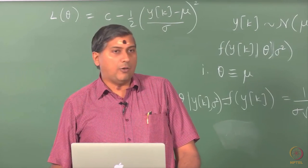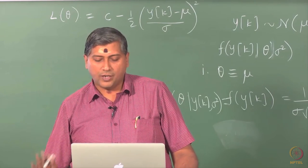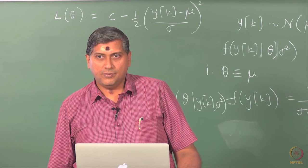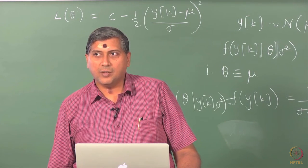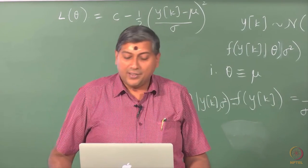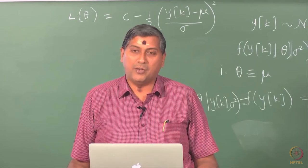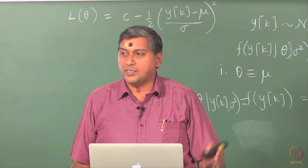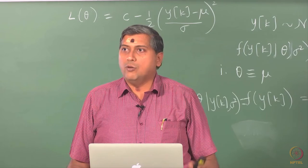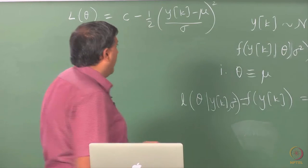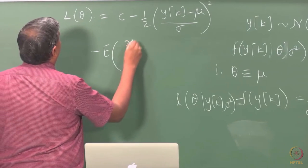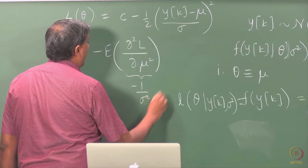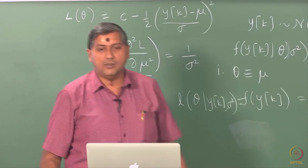The second derivative of the log-likelihood with respect to mu is −1/σ². The negative sign comes in because of the term (y_k − μ). Since the second derivative is −1/σ², what we are interested in is the negative expectation of this second derivative. Since the second derivative is already −1/σ², Fisher's information is simply 1/σ².